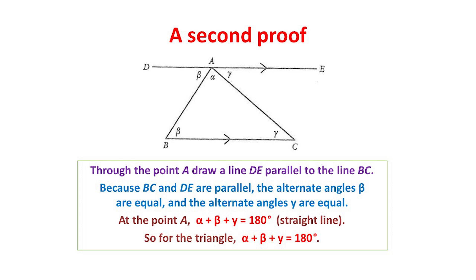Now look back at the point A. Here there are angles alpha, beta and gamma. And again, they form a straight line of 180 degrees. So alpha plus beta plus gamma equals 180 degrees. But as before, the sum of the three angles of the triangle is also alpha plus beta plus gamma, and so is 180 degrees. This again proves the result.